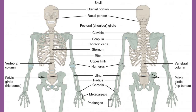Supervising movement of the skeleton are the muscles of the body, which are firmly attached to the skeleton via connective tissue structures called tendons. As muscles contract, they pull on the bones to produce movements of the body. Thus, without a skeleton, you would not be able to stand, run, or even feed yourself.